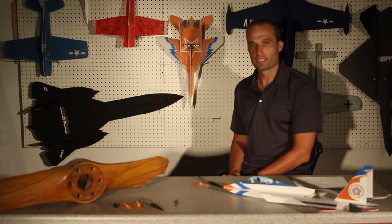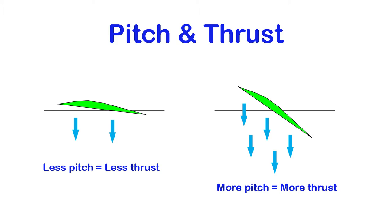But what exactly is pitch? Looking at this simple illustration, you can also think of it as the collective pitch on a helicopter blade. The picture to the left has less pitch, or less of an angle of deflection, and that's going to generate less thrust. The illustration on the right, you can see there is more pitch or more angle of deflection, which is going to give you more thrust.